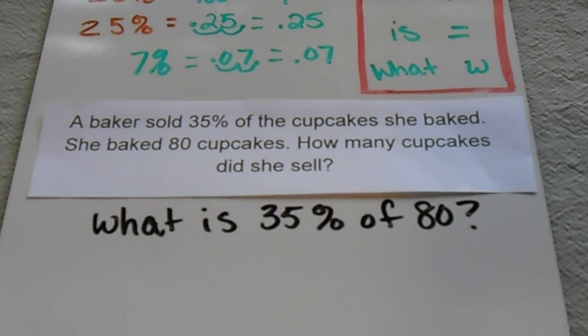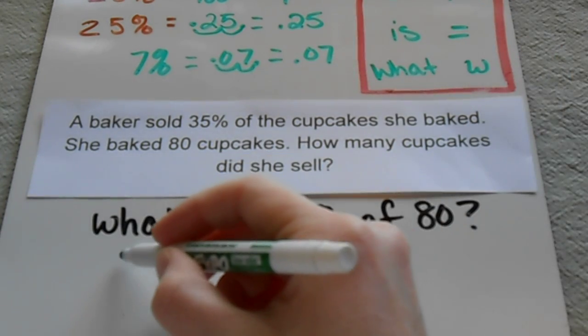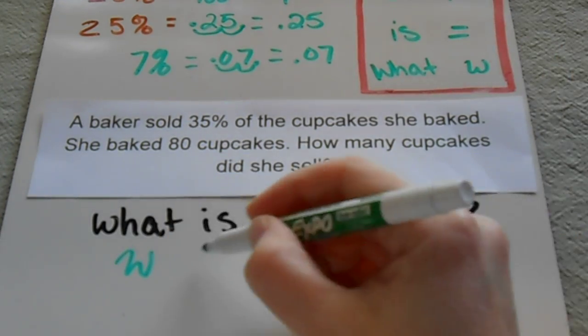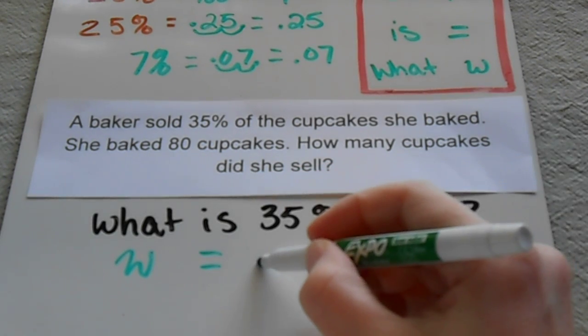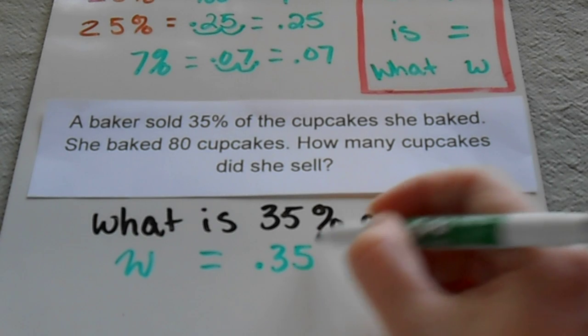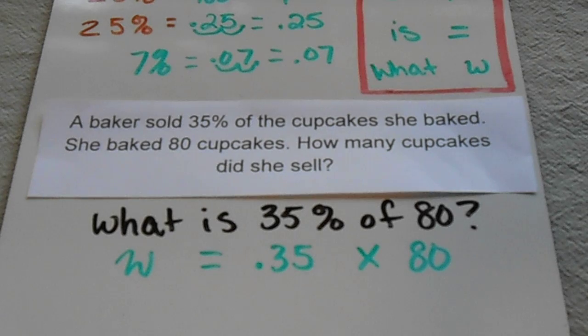Then I'm going to translate all of those into my mathematical terms. So there's my variable, 'is' means equals, 35% I'm going to go ahead and change into a decimal so that I can work with it, 'of' means times, and then my whole number stays the same.